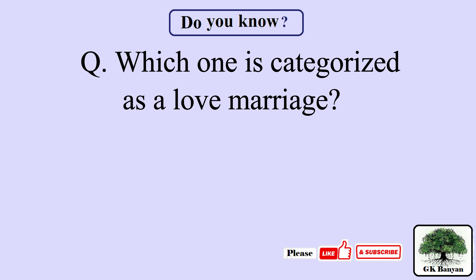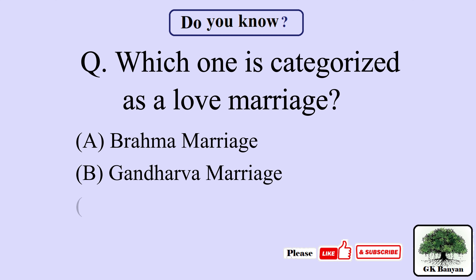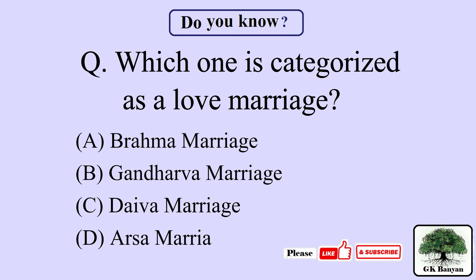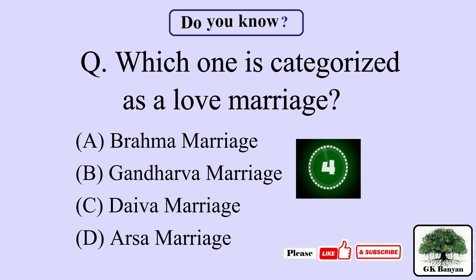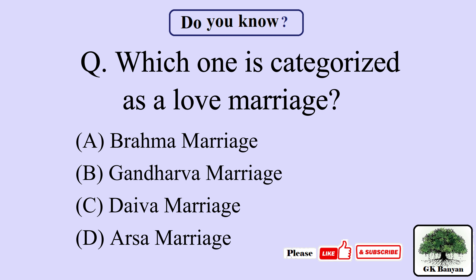Which one is categorized as a love marriage? Your options are: A) Brahma marriage, B) Gandharva marriage, C) Dev marriage, D) Arsh marriage. Your time starts now: 5, 4, 3, 2, 1. The right answer is B) Gandharva marriage.